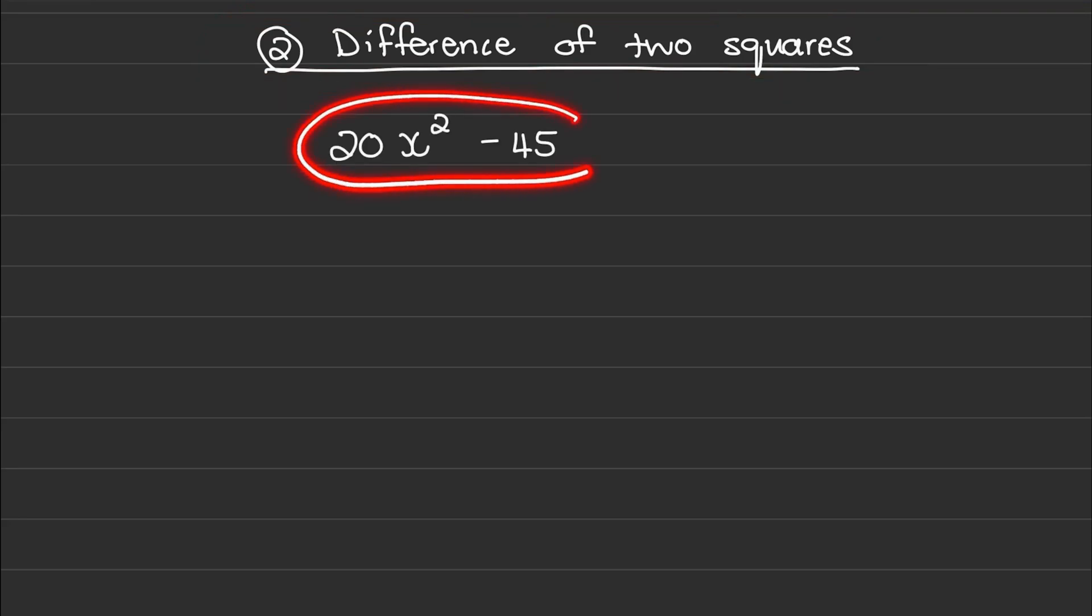Let us factorize 20x² minus 45. Before we can apply the difference of two squares, we look for a common factor.